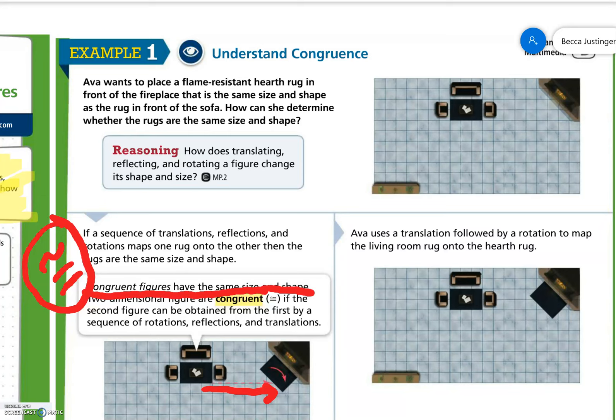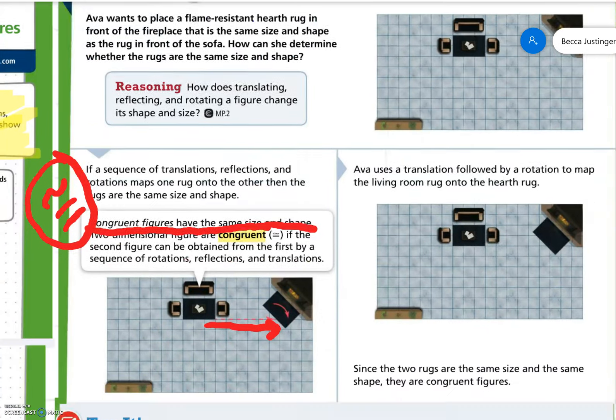So we see that she's going to take the rug, and she's going to translate it to the right, and then rotate clockwise. So Ava uses a translation followed by a rotation to map the living room rug onto the hearth rug. They are the same size and shape. That means they are congruent rugs. They are equal rugs. There's no overlapping. One isn't bigger than the other. And they're both rectangles, so they're congruent.